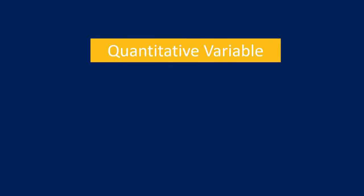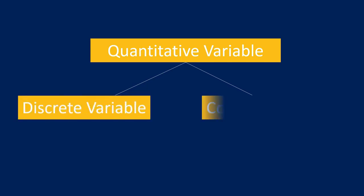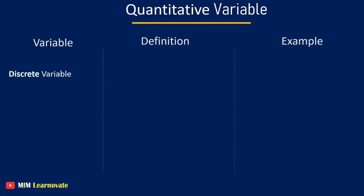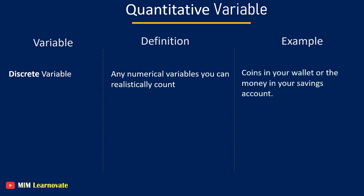Quantitative variables. There are two types of quantitative variables: Discrete variable and continuous variable. Discrete variable - any numerical variables you can realistically count. For example, the coins in your wallet or the money in your savings account. Continuous variable - numerical variables that you could never finish counting. For example, time.